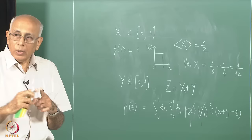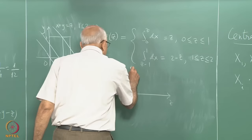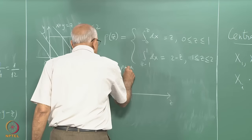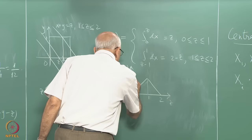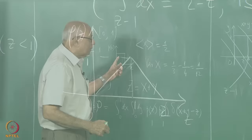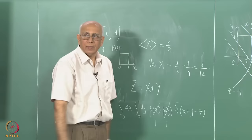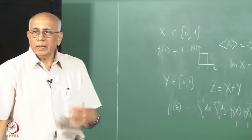So the distribution changes as z crosses 1. If we plot rho(z) versus z, it rises linearly to 1 at z = 1 and then falls back — a triangular distribution. What was flat has become a triangular shape after adding just two variables. It is normalized since the area equals half base times height = half times 2 times 1 = 1.